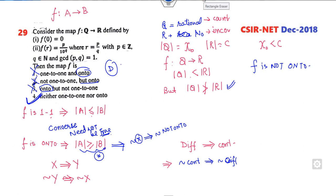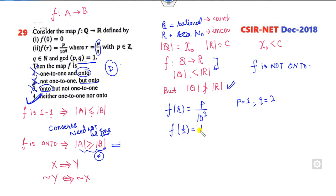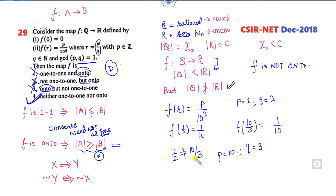To verify it is not one-one: consider the function f(p, q) = p/q where gcd(p, q) = 1. Take p = 1, q = 2, giving 1/2, so r = p/q = 1/10... Take another pair: q = 3, p = 10, giving 10/3 with gcd 1. But 1/2 ≠ 10/3, so different inputs can give the same rational output — hence the function is not one-one. Therefore the answer is D. This is an important tip to solve every question related to one-one mappings.